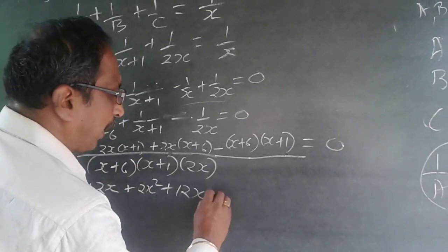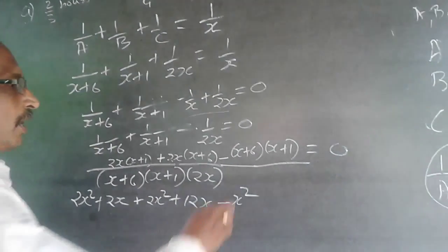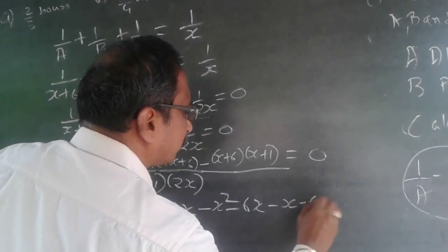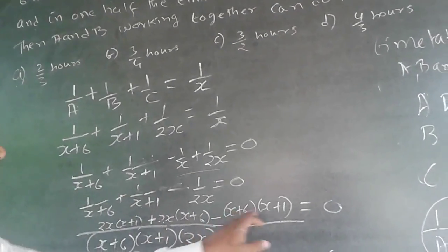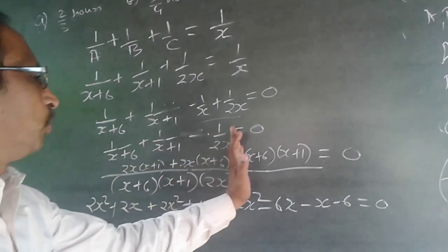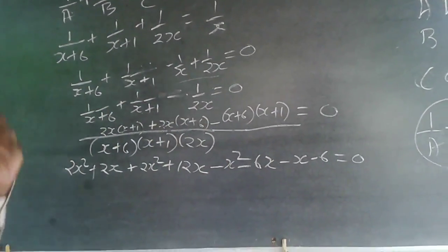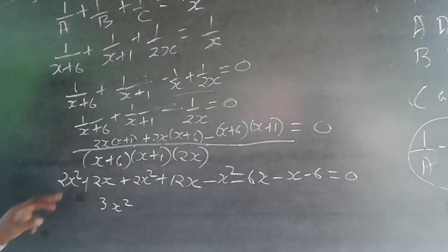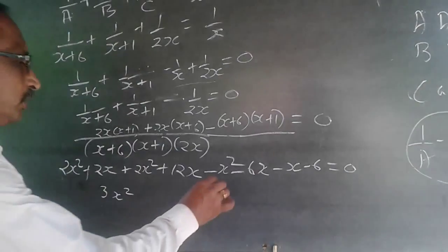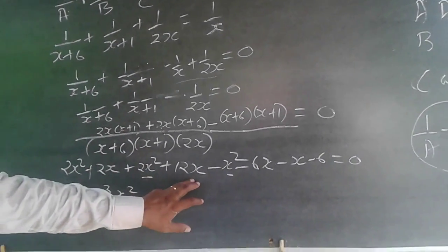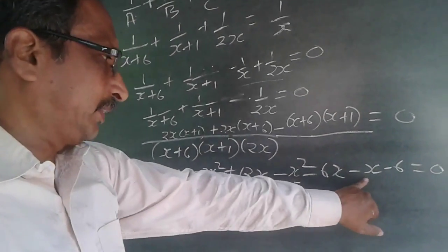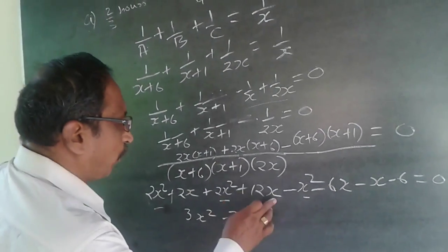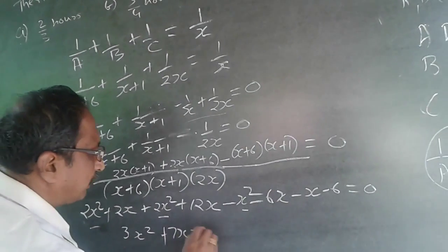Combining like terms: 2x² + 2x² minus x² gives 3x². For the x terms: 2x + 12x minus 7x gives plus 7x. The constant term is minus 6. So the equation becomes 3x² + 7x minus 6 = 0.